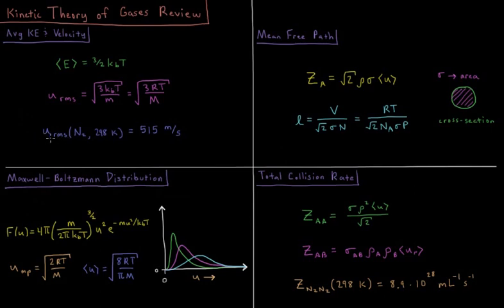Plugging in these values for something typical like nitrogen-2, the main constituent of air at 298 Kelvin, has an average speed of 515 meters per second or about 1000 miles per hour.